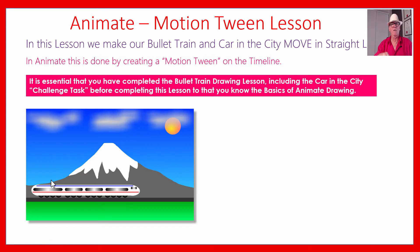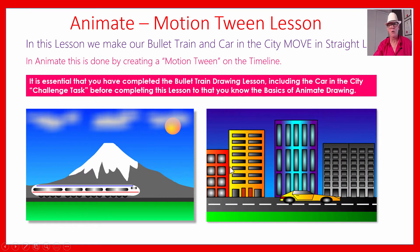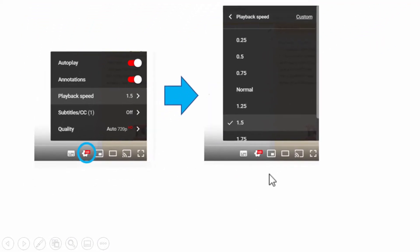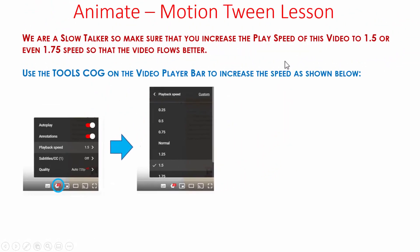You can look at the timeline index in the video and jump to the live demo if you want. After the live demo, we'll come back to showing you how to draw really cool-looking buildings and have the car driving through the city. Then at the end, we'll show you how to add some trees along the side of the road. I'm a slow talker, so remember to go to the YouTube settings cog, go to play speed, and set it to 1.5, 1.75, or even double speed.